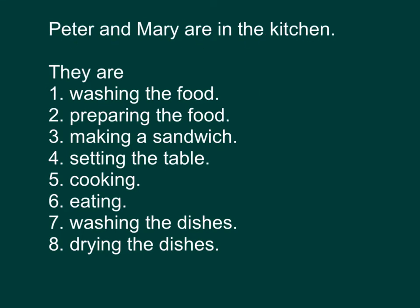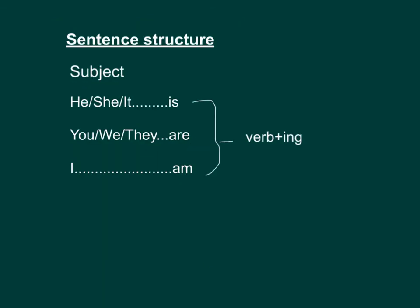Peter and Mary are in the kitchen. 今次的 subject 是 Peter and Mary，又或者我们可以用 they 来代表。Peter and Mary 总共有两个人，所以后面我们跟 are，同样 they 后面都是跟 are 的。They are washing the food. They are preparing the food. They are making a sandwich. They are setting the table. They are cooking. They are eating. They are washing the dishes. They are drying the dishes.